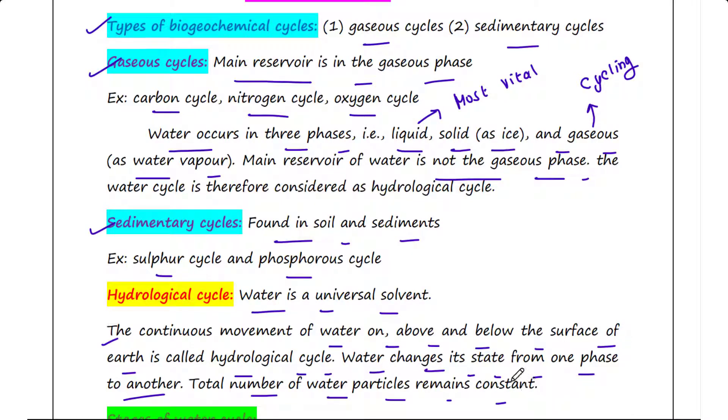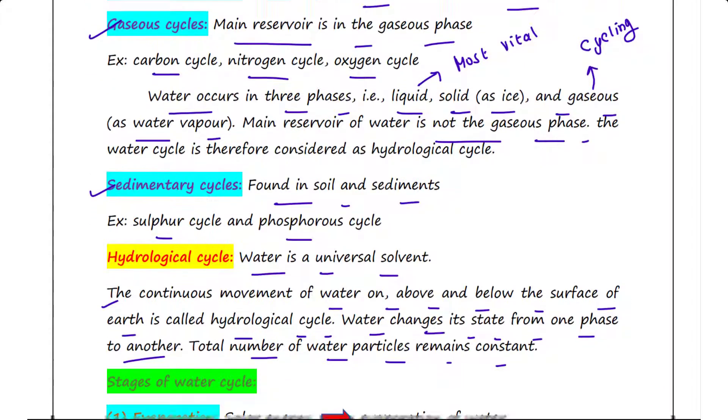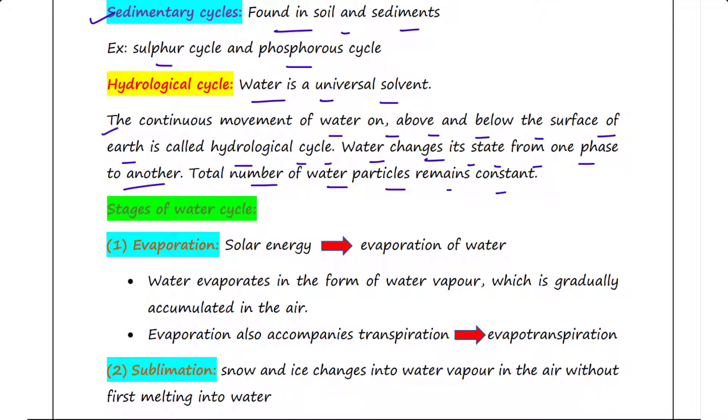Let's talk about the stages of water cycle. Four stages. Evaporation: solar energy causes water to evaporate from earth's surface. Water evaporates in the form of water vapor which is gradually accumulated in the air. When evaporation occurs through the leaves of plants, it also accompanies transpiration, and this process is called evapotranspiration, which draws large amounts of water in the air.